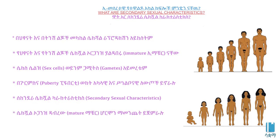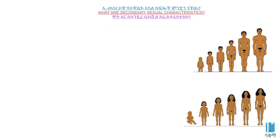One of the important aspects is the primary sexual characteristics, which affect human hormones. This involves a hormone related to secondary sexual characteristics, which is called puberty. In puberty, there are secondary sexual characteristics.